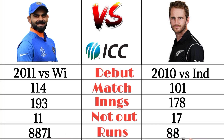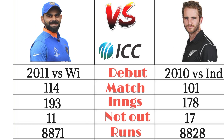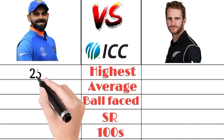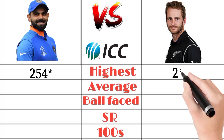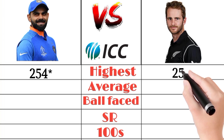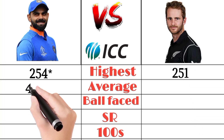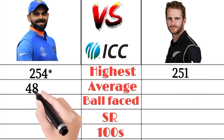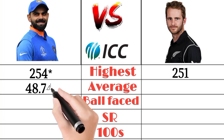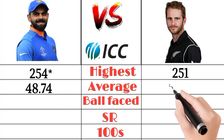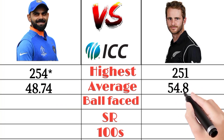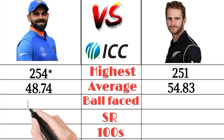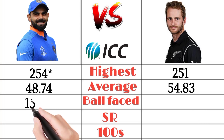Kane Williamson scored 8888 runs in test cricket. Virat Kohli's highest score in tests is 254 and Kane Williamson's is 251. Virat Kohli's test average is 48.74 and Kane Williamson's test average is 54.83.